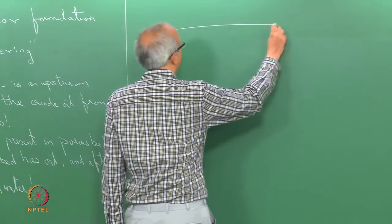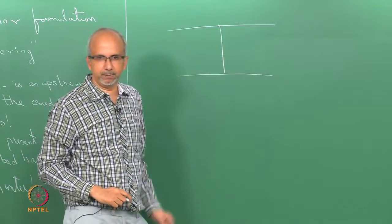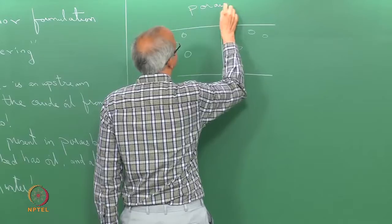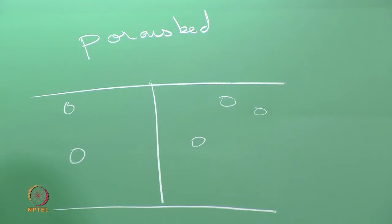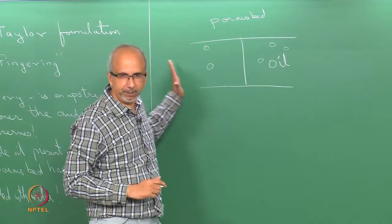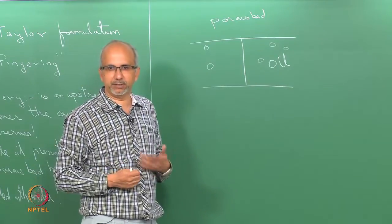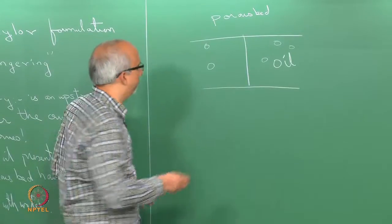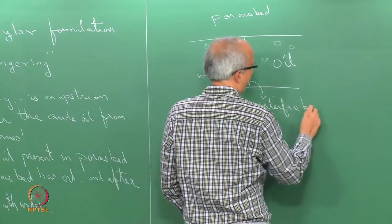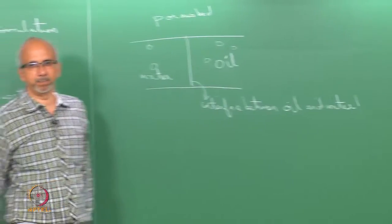To visualize this problem, imagine a horizontal porous bed with soil particles. Oil is present here. We pump water in from the left. In actual situations, we don't have a well-defined geometry, but for mathematical formulation we consider a rectangular geometry. There is water on the left and an interface between oil and water.